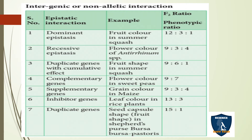Dominant epistasis: fruit color in summer squash, ratio 12:3:1. Recessive epistasis: flower color in Antirrhinum species, ratio 9:3:4. Duplicate genes with cumulative effect: fruit shape in summer squash, ratio 9:6:1. Complementary genes: flower color in sweet peas, ratio 9:7. Complementary genes: grain color in maize, ratio 9:3:4. Inhibitor genes: leaf color in rice plants, ratio 13:3. Duplicate genes: seed capsule shape in Bursa pastoris, ratio 15:1.